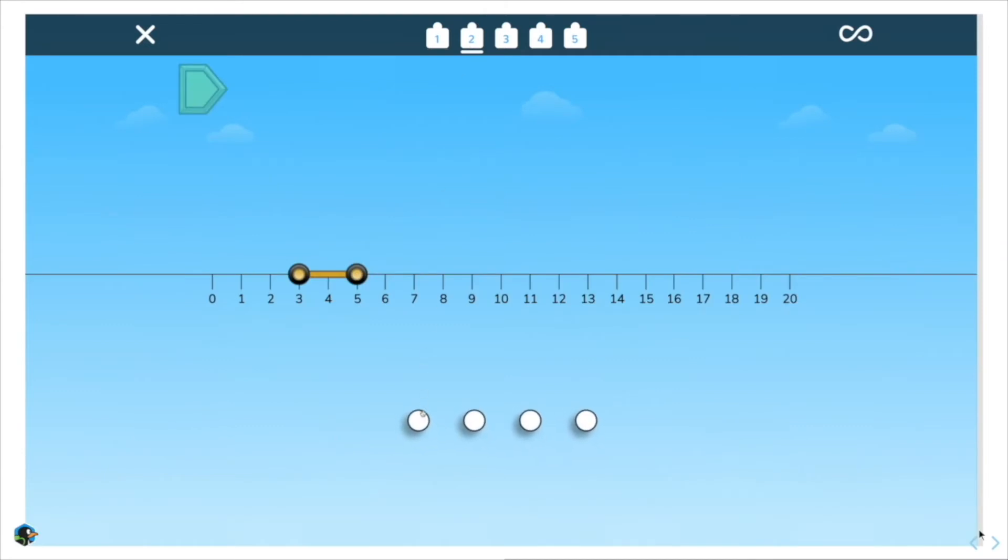Next, we had a puzzle that was skip counting by twos, but didn't start at zero. Then the third puzzle introduced a new idea. The blobs are numbered.